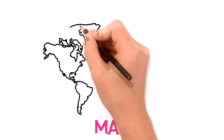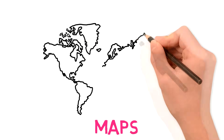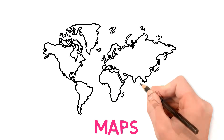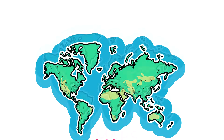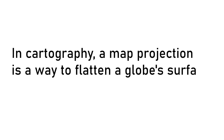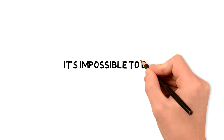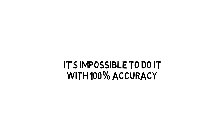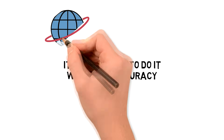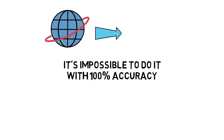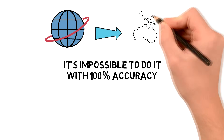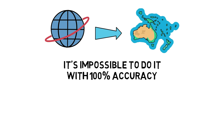Maps are attempts at representing our countries and continents on a flat surface. In cartography, a map projection is a way to flatten a globe's surface into a plane in order to make a map. But there's an issue — it's impossible to do it in a way that is 100% accurate, because we need to transform latitude and longitude lines from the globe into locations on a plane surface.